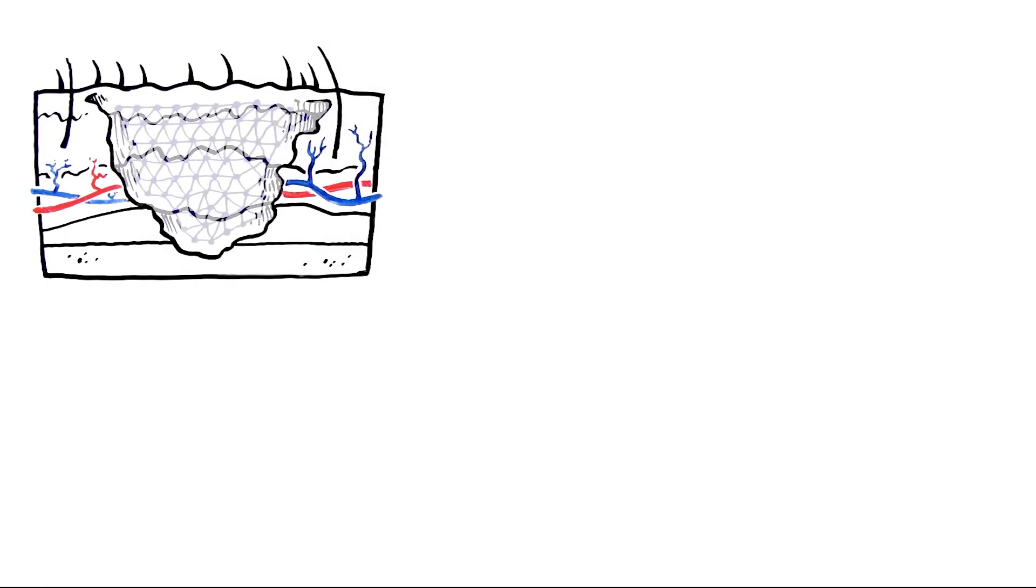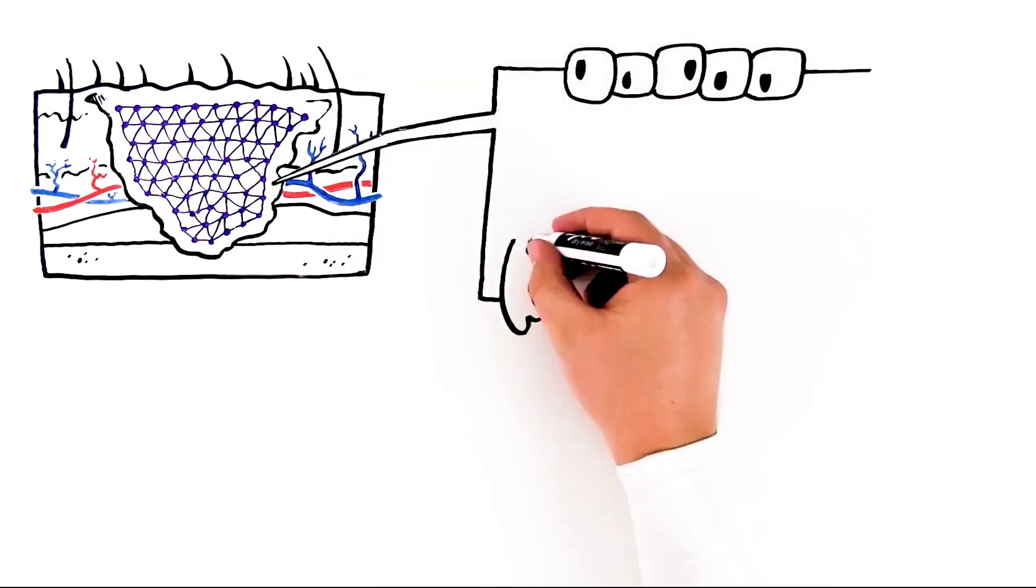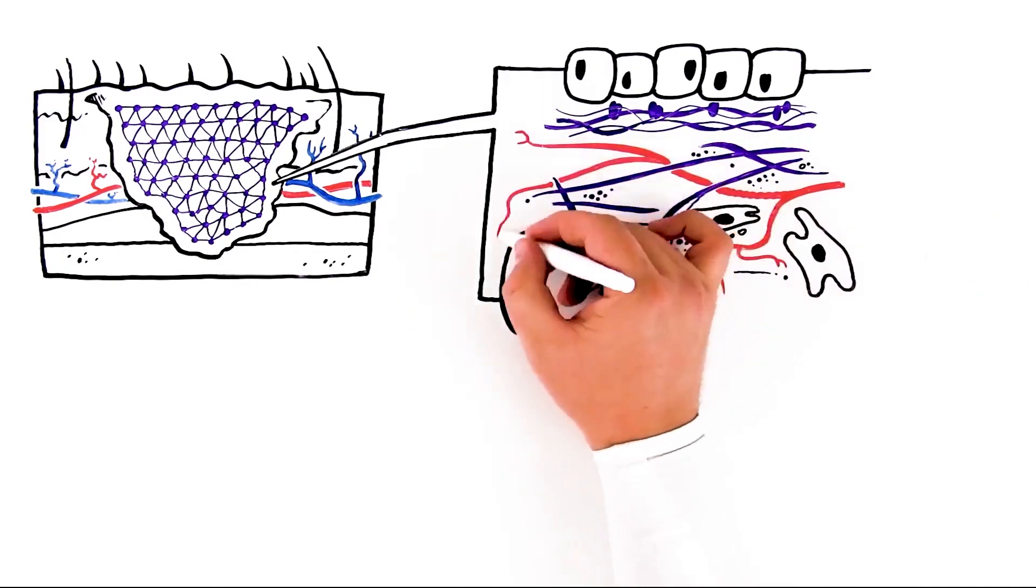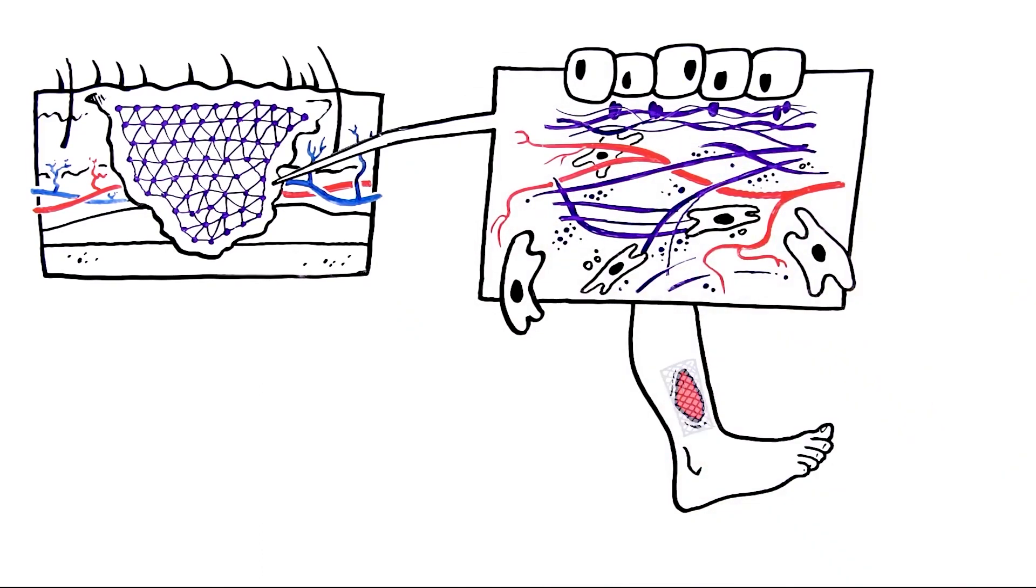endoform acts as a temporary scaffold, allowing the patient's own cells to migrate into the endoform, establish a new blood supply and grow new tissue. When endoform's job is done, it is completely replaced by the patient's own tissue.